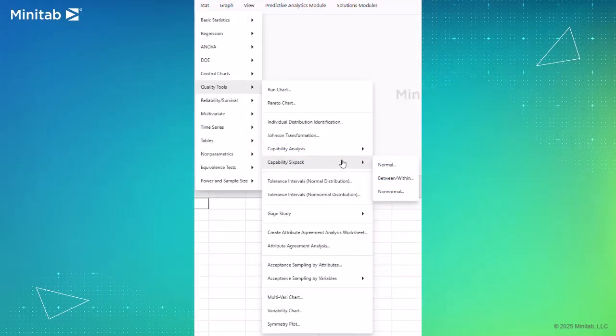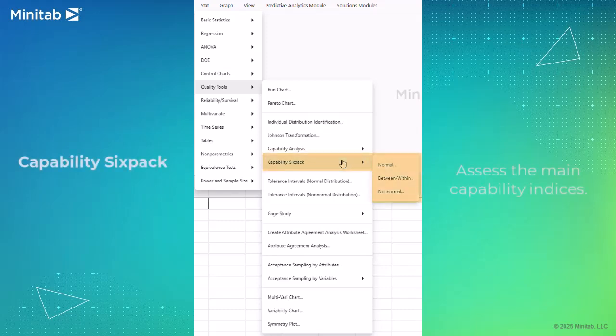Minitab Statistical Software also offers capability six-pack analyses to assess the main capability indices. You can also use six-pack to evaluate the stability in control and distribution assumptions for your analysis.